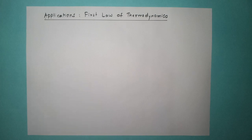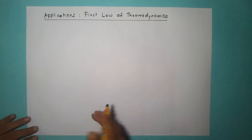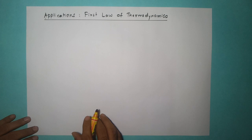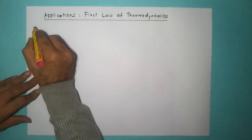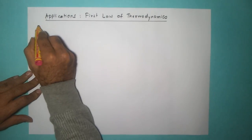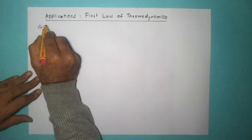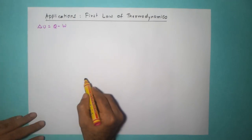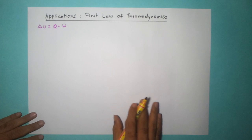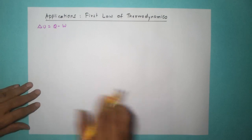Here are a few applications of the first law of thermodynamics. We will be looking at some thermodynamic processes and apply the first law to those processes. Just to revise: delta U is equal to Q minus W is the statement of the first law of thermodynamics.